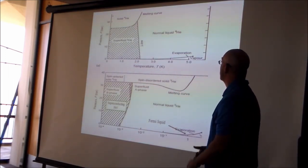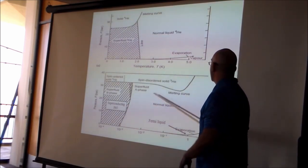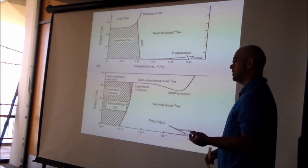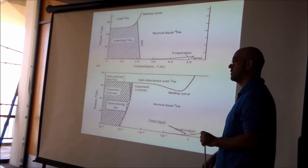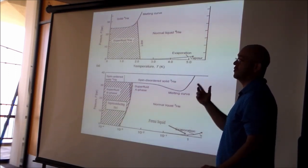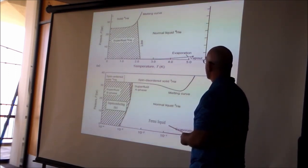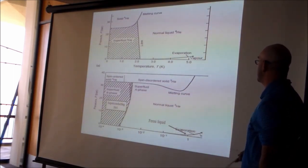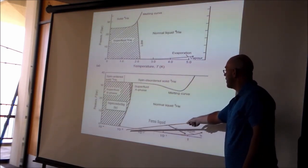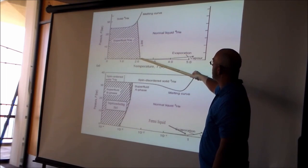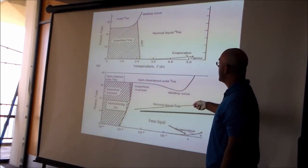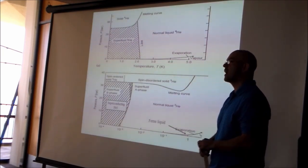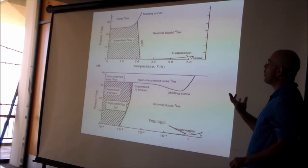Helium-4 is a boson because its four nucleons — two protons and two neutrons — have spins that add to zero, and its two electrons also have spins that add to zero. Helium-3 is a fermion because it has one fewer neutron. Helium-4 goes superfluid at 2.17 Kelvin. Helium-3 can also make a superfluid transition, but only at 10⁻³ Kelvin, by forming Cooper pairs.